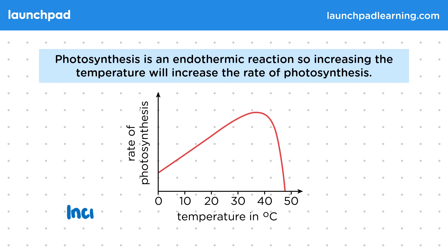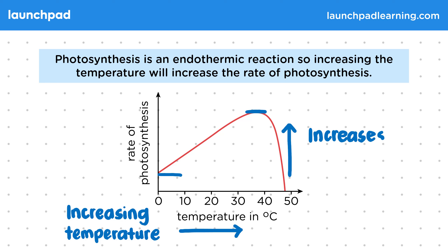The temperature and photosynthesis rate will produce a graph that looks like this. It increases up to a certain point, around 40 degrees C, and then decreases.